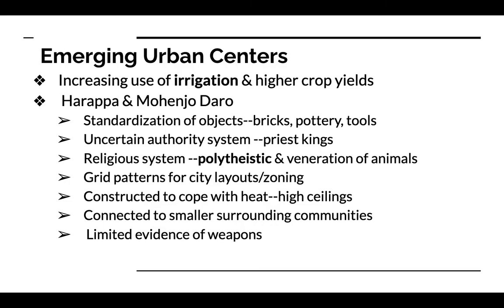There's an uncertain authority system in the Indus Valley civilization — we don't know a whole lot about who was in charge. Was it military rule? Religious rule? The best current speculation seems to be that priest-kings, some sort of religious-political figures, would have been in charge or at least held authority. As for the religious system, like many ancient societies, they are polytheistic, believing in many gods. There may also have been the veneration or worship of animals, as they appear quite frequently in artwork.